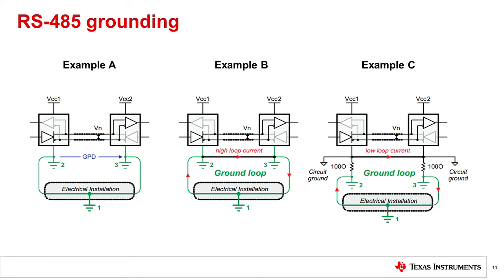There are a few different ways grounding can be accomplished in an RS-485 system. In example A, the system is vulnerable to high ground potential differences; if the ground potential difference exceeds the limit of the device, it could stop working or even be damaged. In example B, if a high ground potential difference is present, large ground loop currents could form which can be coupled into the data lines as common mode noise. Example C is recommended by the RS-485 standard: adding series resistors lowers the loop current, but noise could still exist.